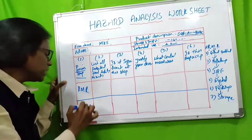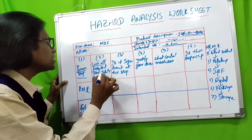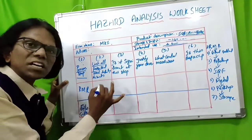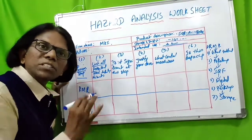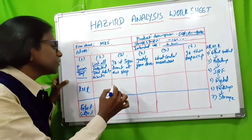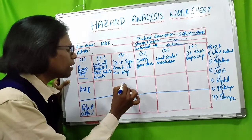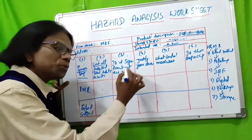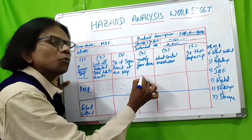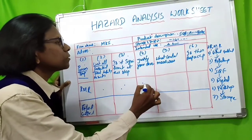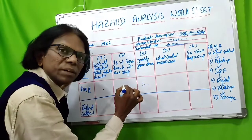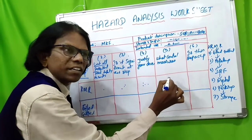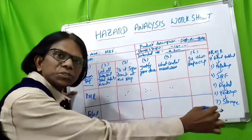In the hazard analysis worksheet, list all the process steps from the flowchart in column one. Then in column two, list all potential food safety hazards identified at each process step. In step three, determine if each potential food safety hazard is significant or not — if yes, mark as significant; if no, mark as non-significant. If significant, justify why in column four, and in column five identify the control measures to prevent, eliminate, or reduce the significant hazard.